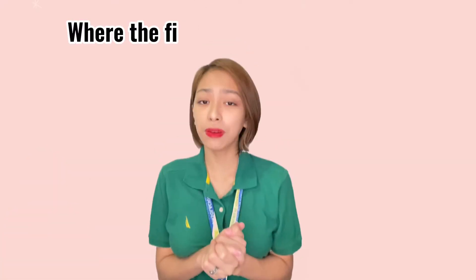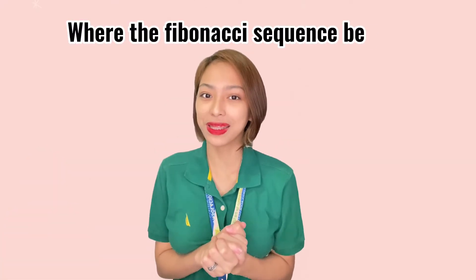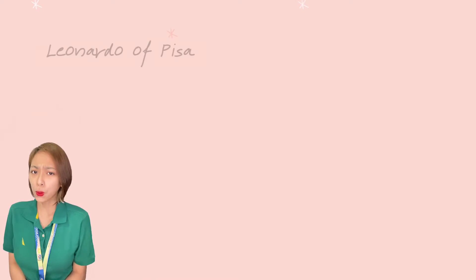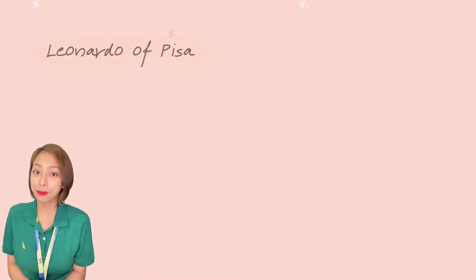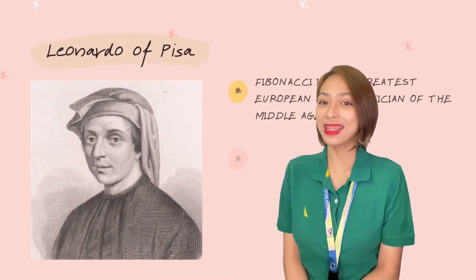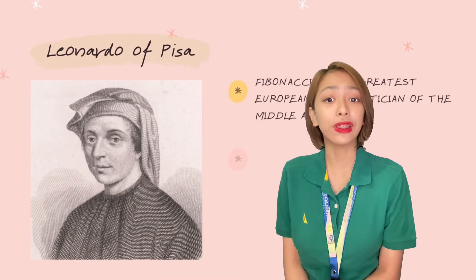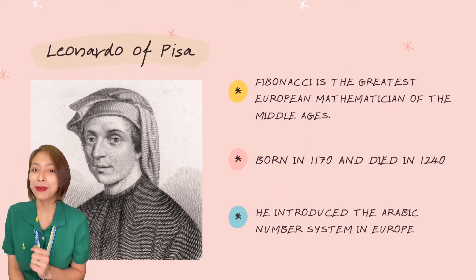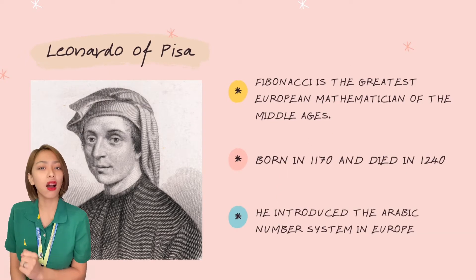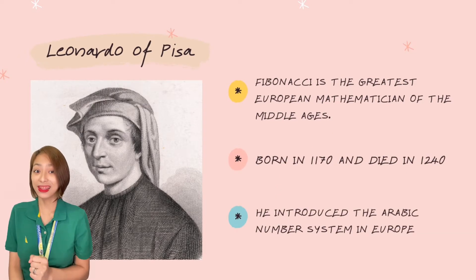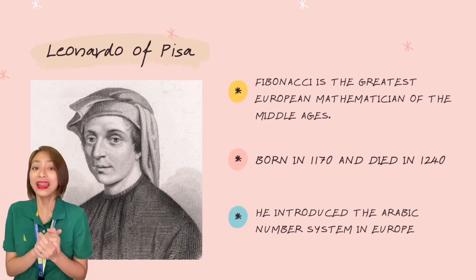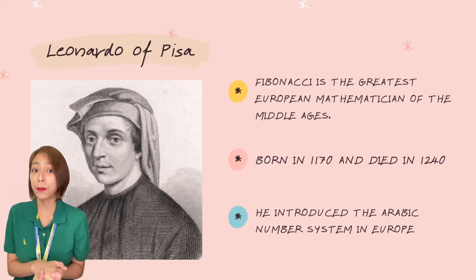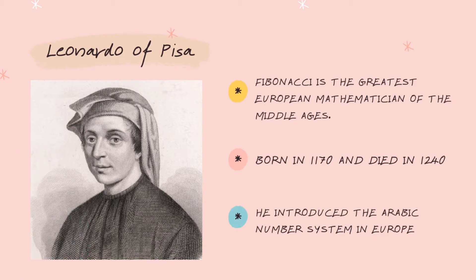So first, let's go back to where the Fibonacci Sequence began. Who is Leonardo of Pisa? Fibonacci is a nickname of Leonardo of Pisa. Fibonacci is the greatest European mathematician of the Middle Ages, born in 1170 and died in 1240. He introduced the Arabic number system in Europe.